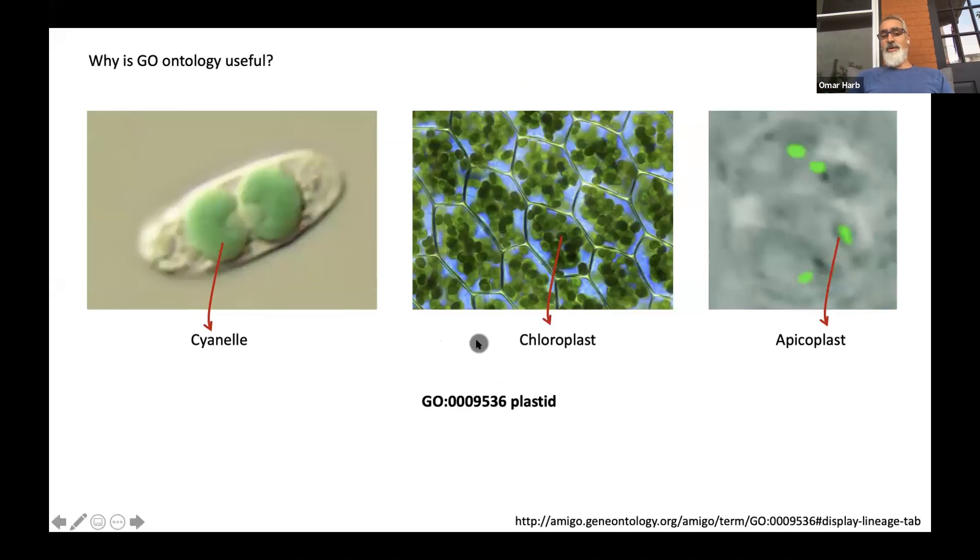Here's a general example of where an ontology is quite useful. This organelle here is a cyanelle, this one is a chloroplast, and this is an apicoplast. But all of them are plastids, so they all would fall under the plastid gene ontology. If you have a gene that functions in the apicoplast and a gene in plants that functions in a chloroplast and one that functions in cyanelles, they can all be connected to each other by virtue of getting assigned a GO term for plastid.